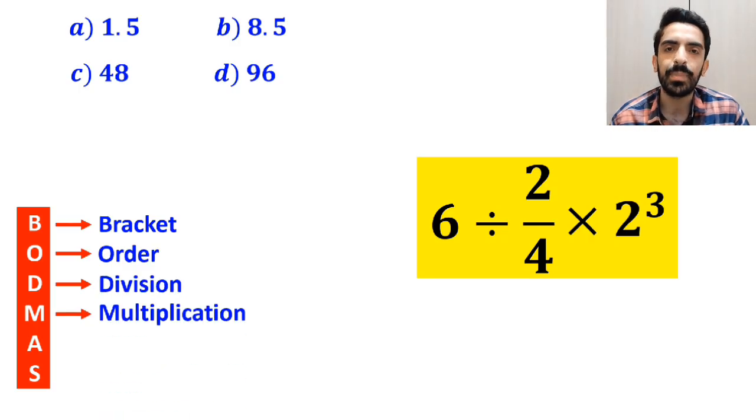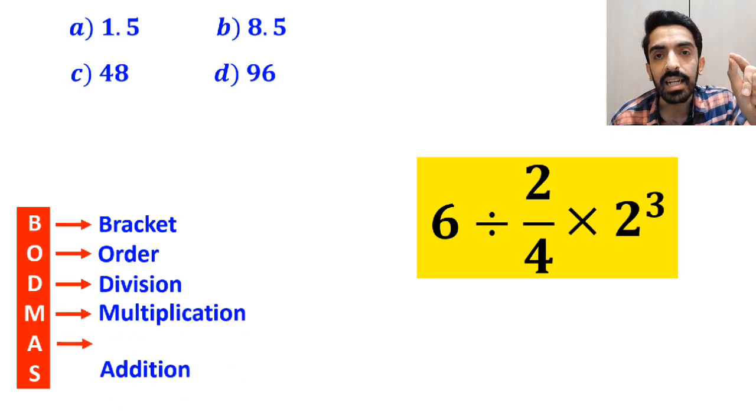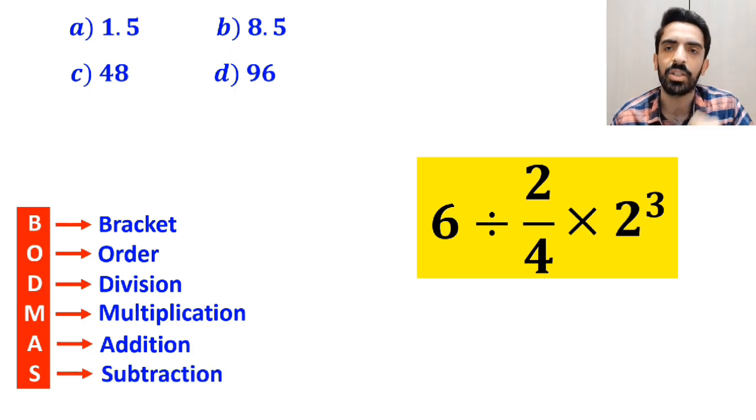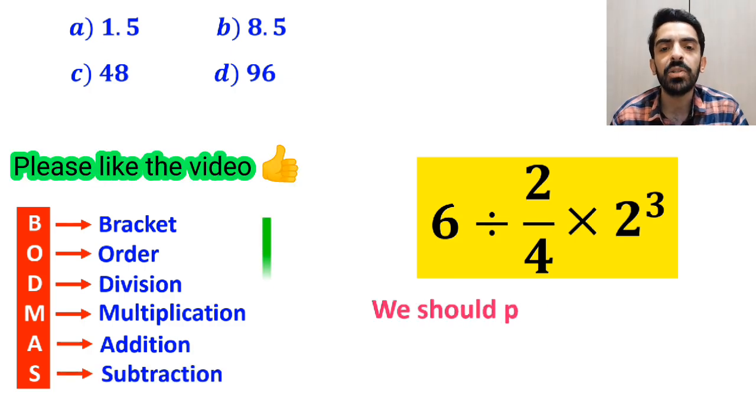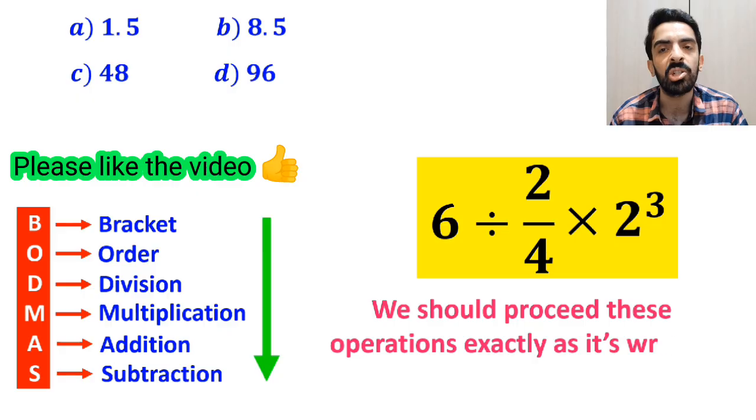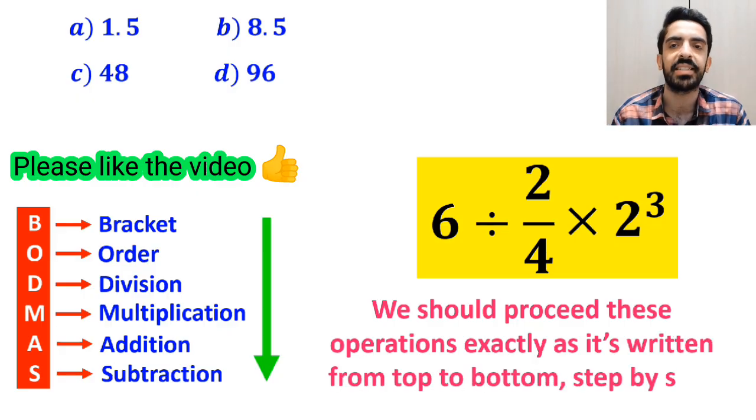M stands for multiplication, A stands for addition, and S stands for subtraction. We should perform these operations exactly as it is written from top to bottom step by step.